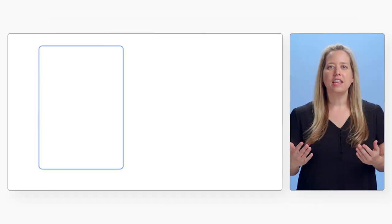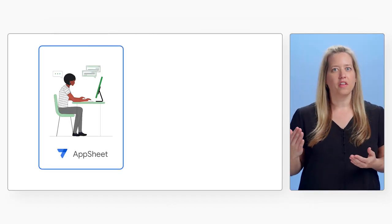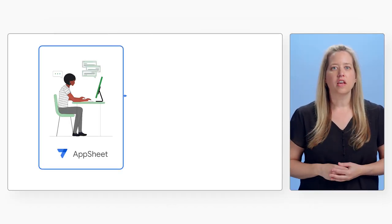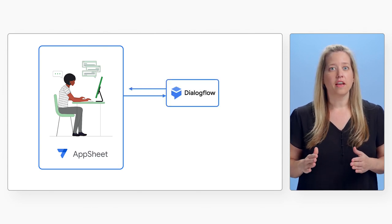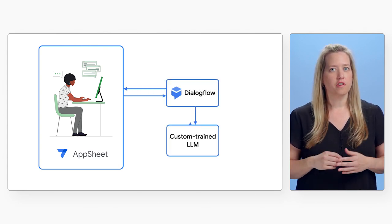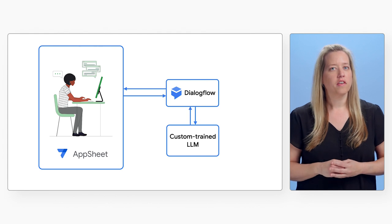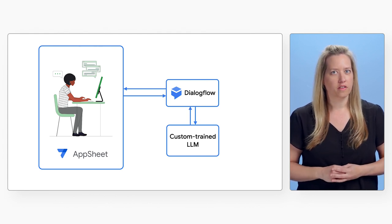So what makes this possible? Taking a look at the components at a high level, the user engages with AppSheet. This interaction relies on Dialogflow and Generative AI through a custom-trained LLM, or large language model.